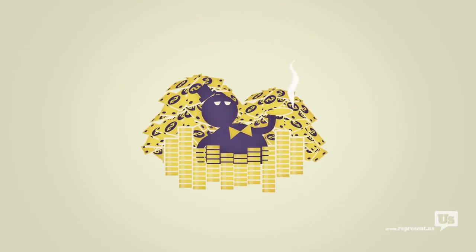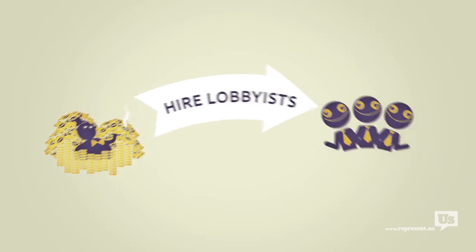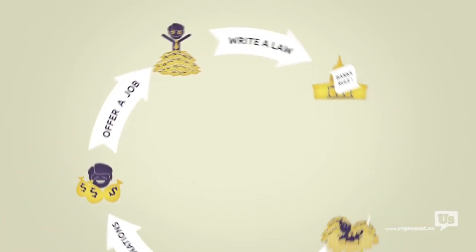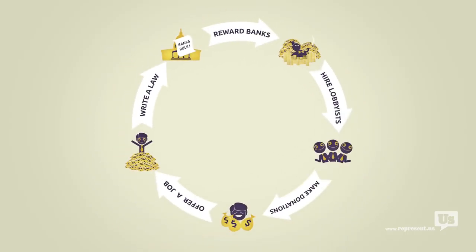This is how a bill becomes a law. A special interest hires some lobbyists, those lobbyists collect campaign contributions, offer jobs, and then write the laws that Congress then passes to help those same special interests.